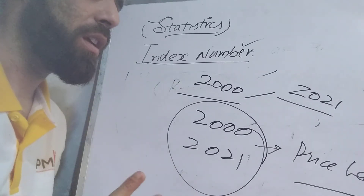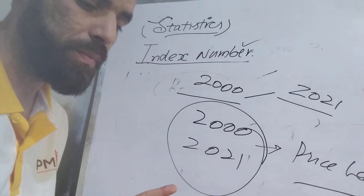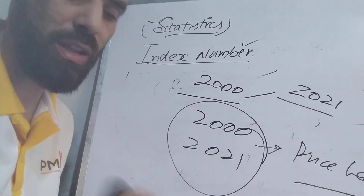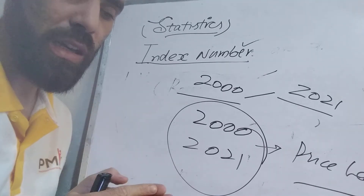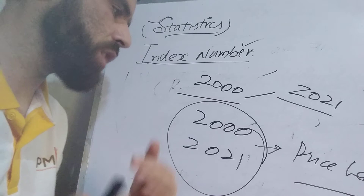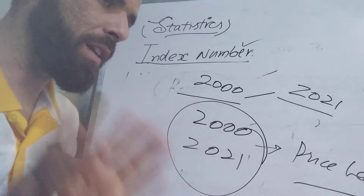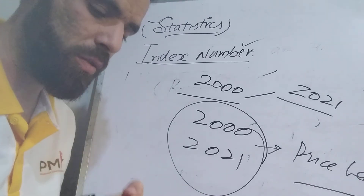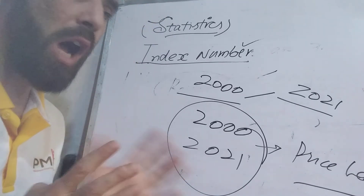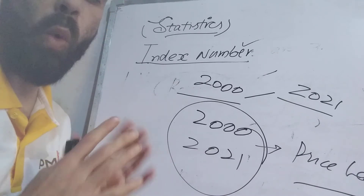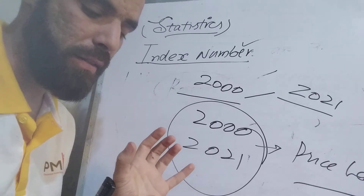Apart from measuring price levels, index numbers are also used in various other industries and business enterprises. Being a researcher, you can also use them. This topic is also in our examination, both for JKSSB and other BSc examinations, so we will learn it according to how the paper is set and what types of questions are likely to come.